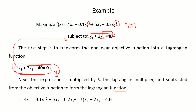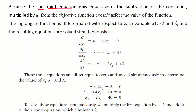Since the constraint function equals 0, when we subtract lambda times the constraint from the objective function, nothing changes — because the value of x₁ + 2x₂ − 40 equals 0. The Lagrangian function is then differentiated with respect to each variable — x₁, x₂, and lambda — and the resulting equations are solved using simultaneous equations.